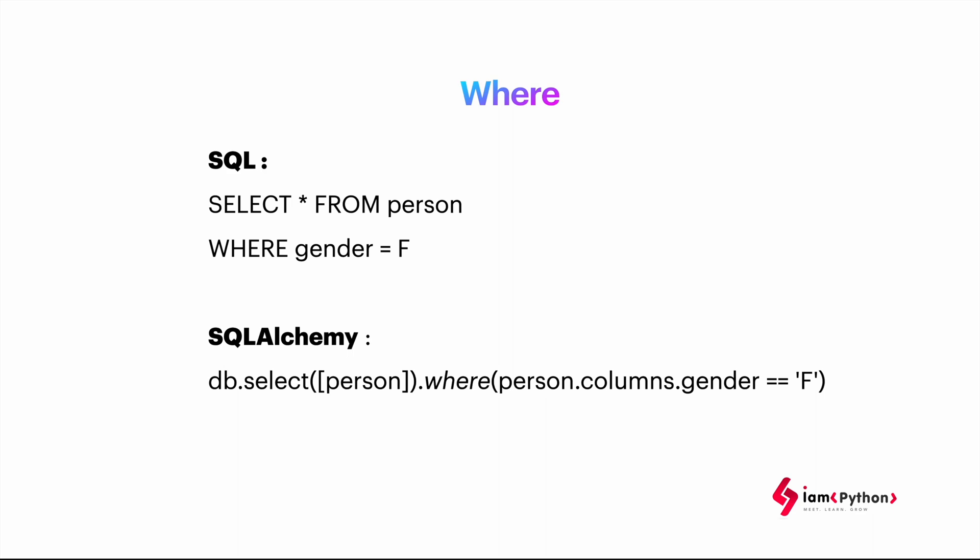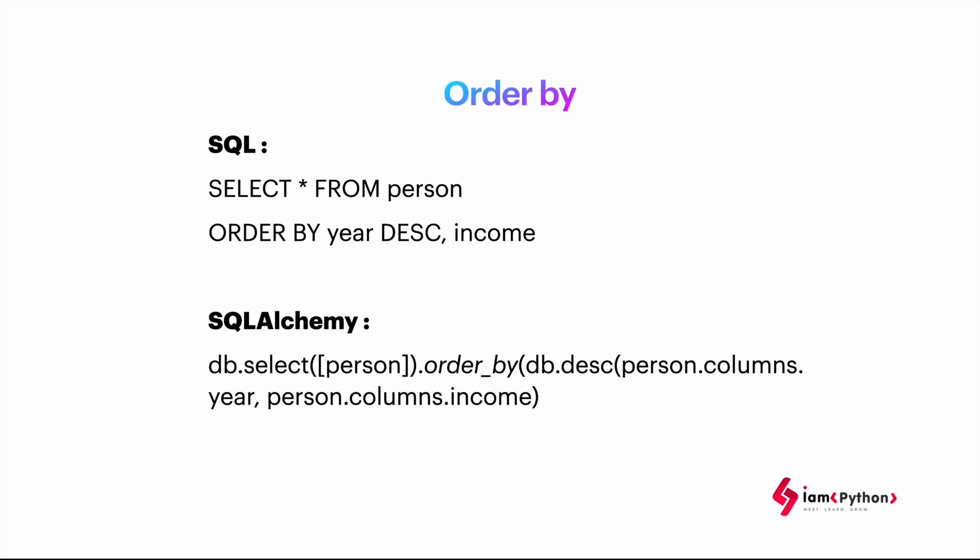For conditions, for example if you want to retrieve data based on a condition, in SQL you'd write: SELECT * FROM person WHERE gender = 'female'. The same query written in SQLAlchemy Python code would be: db.select(person).where(person.columns.gender == 'F'). So you don't need to write SQL queries — you write it in Python code. This example also shows an ORDER BY, and we will see practically how it works in future sessions.